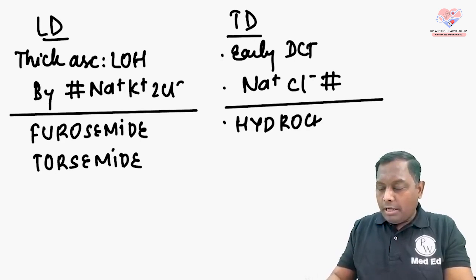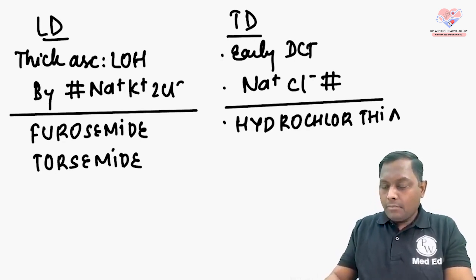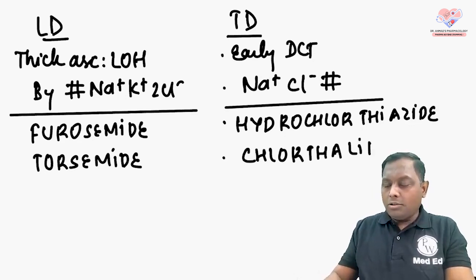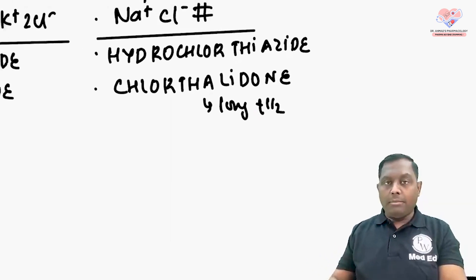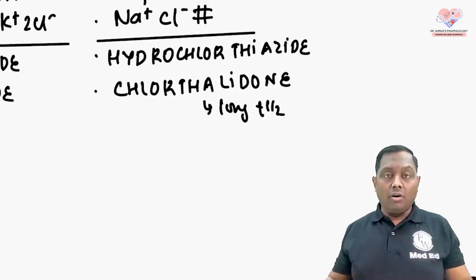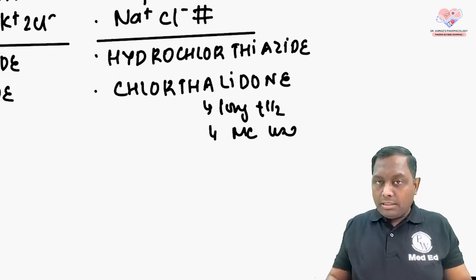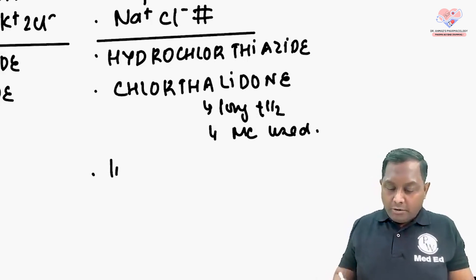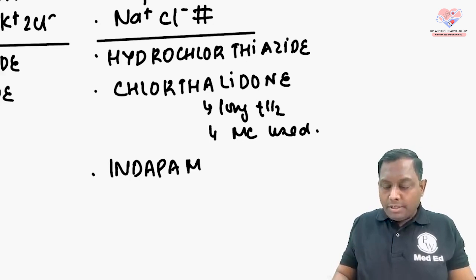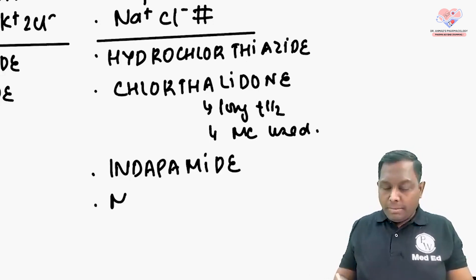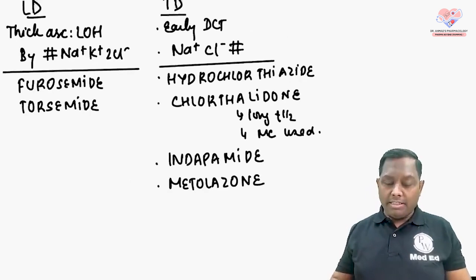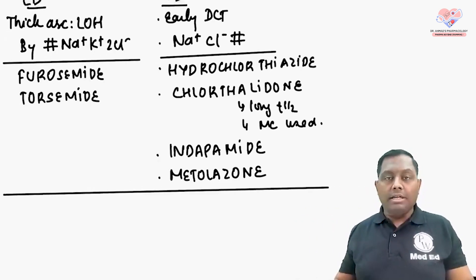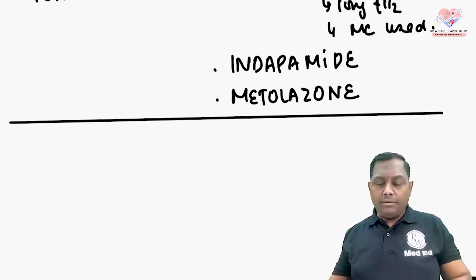Thiazide diuretics include hydrochlorothiazide, chlorthalidone — which has a longer half-life and is more commonly utilized — indapamide, and metolazone. Both loop and thiazide diuretics share some common and some uncommon side effects.